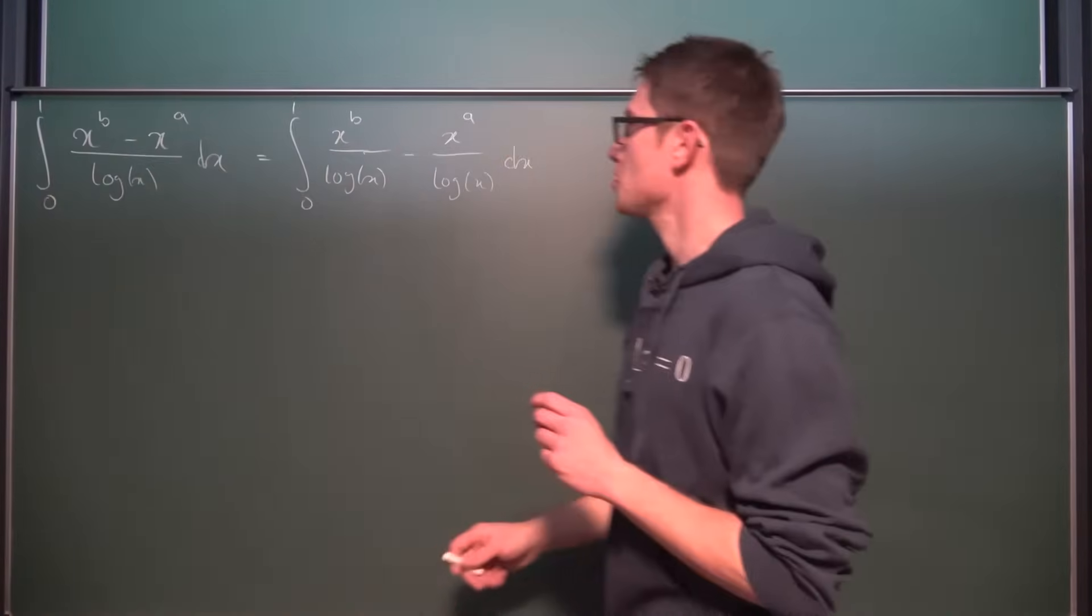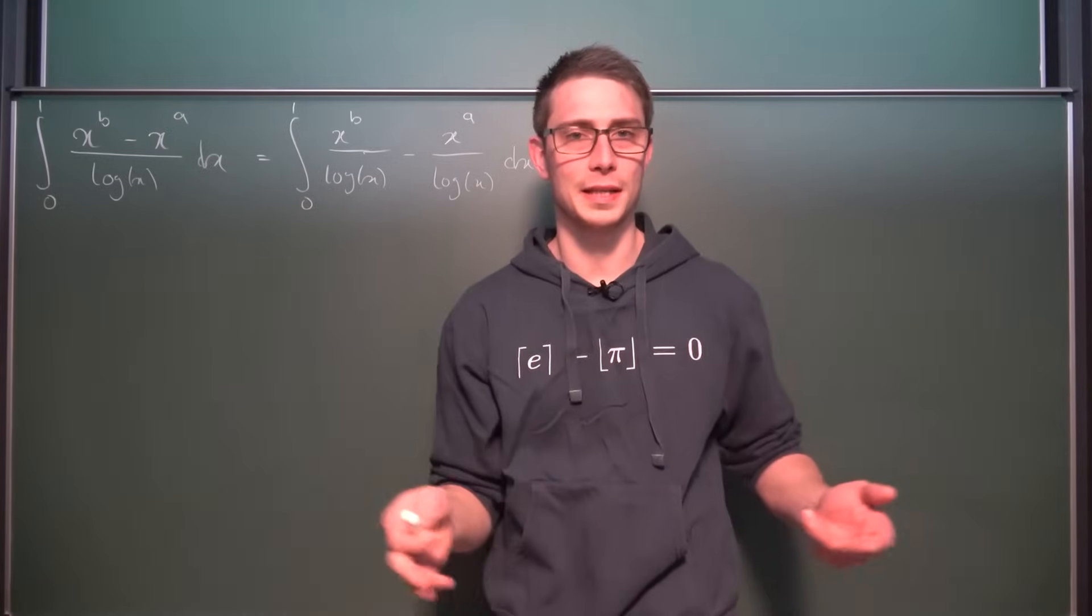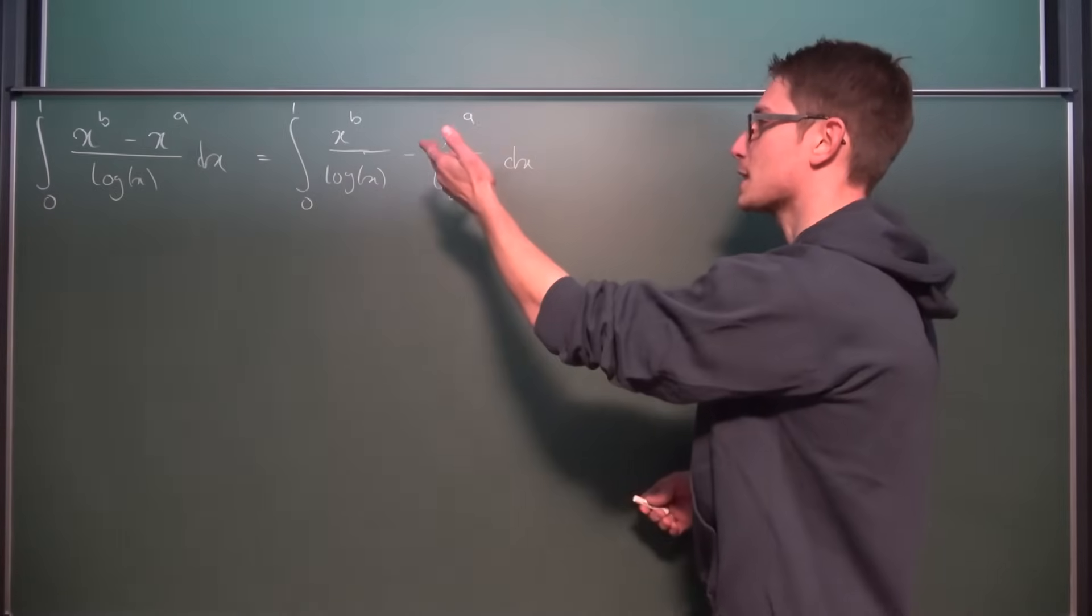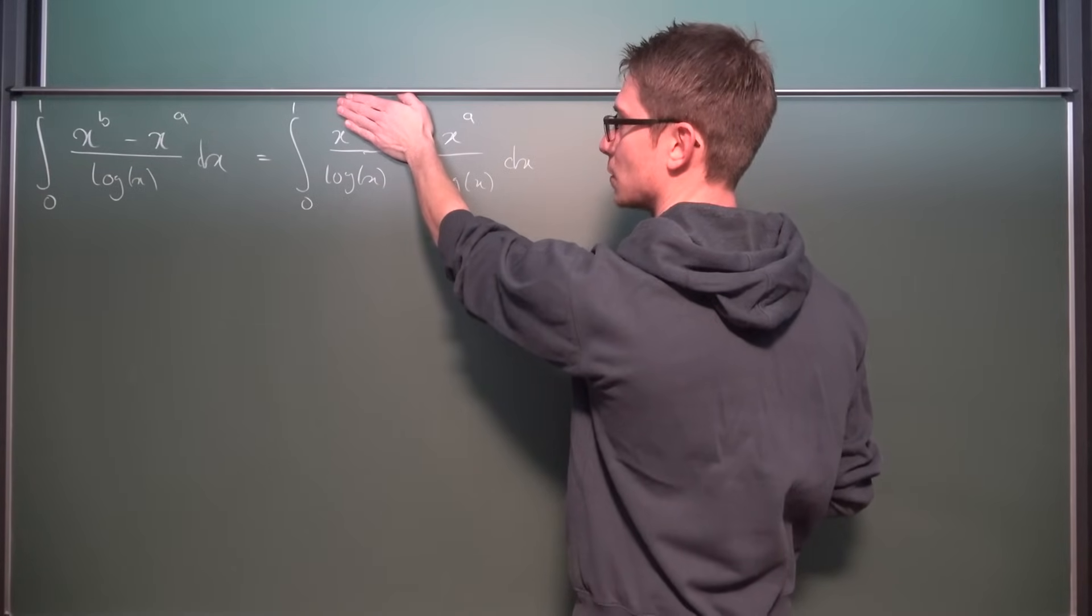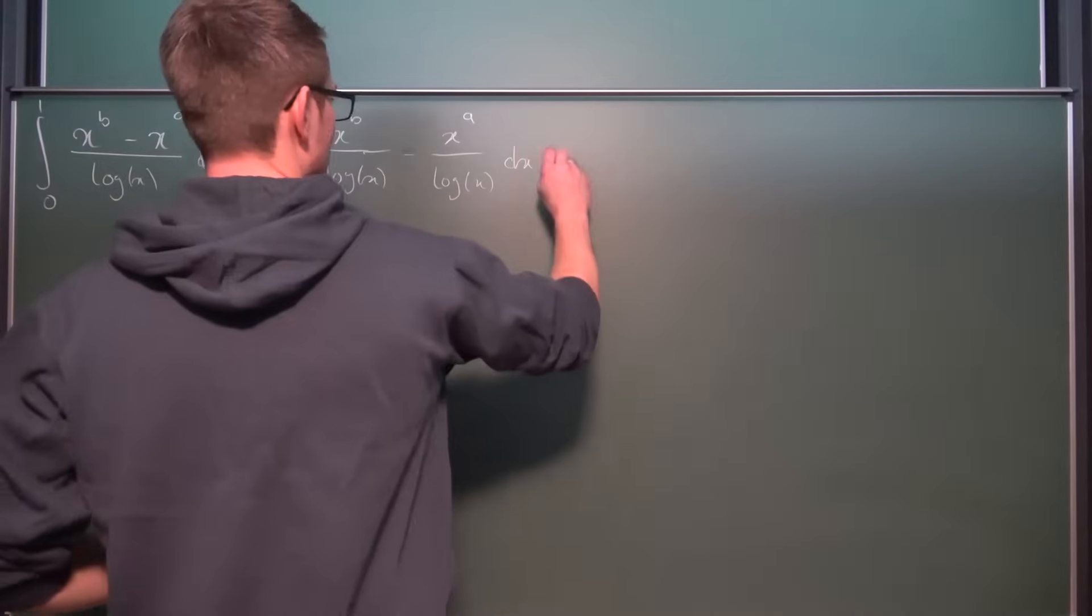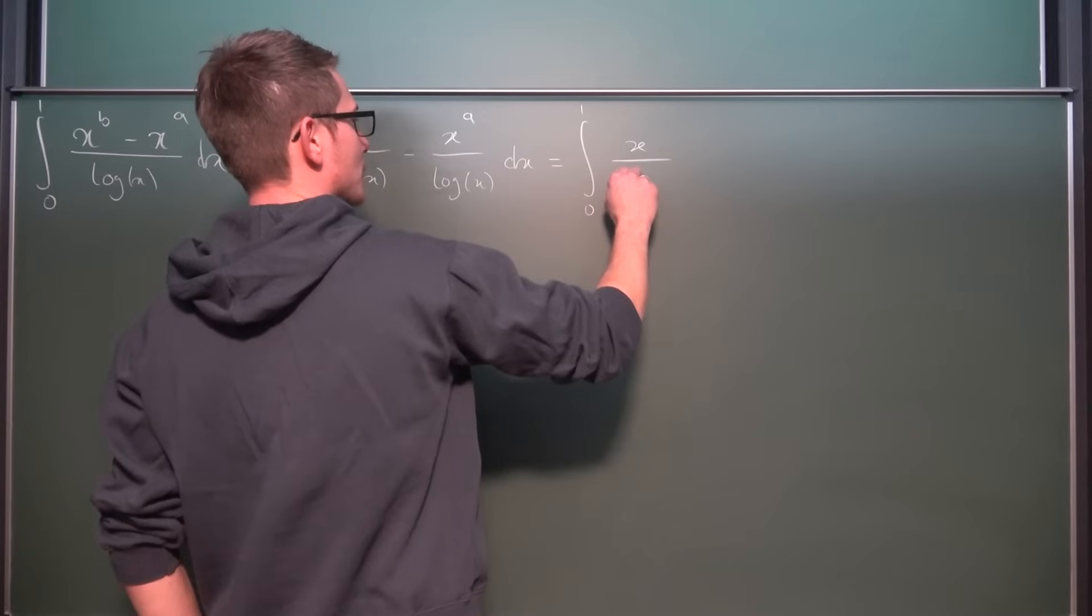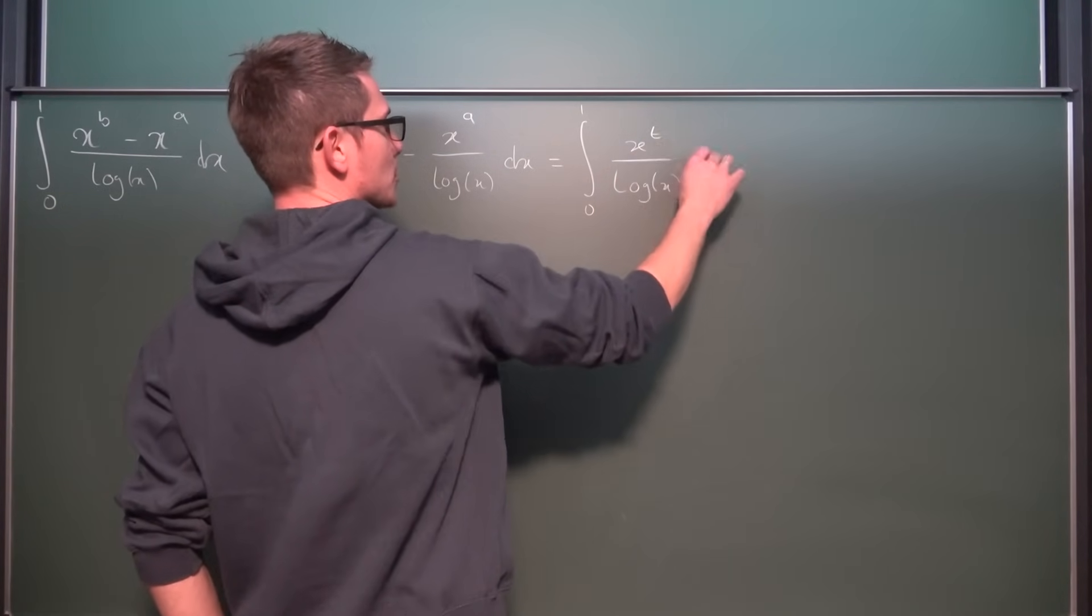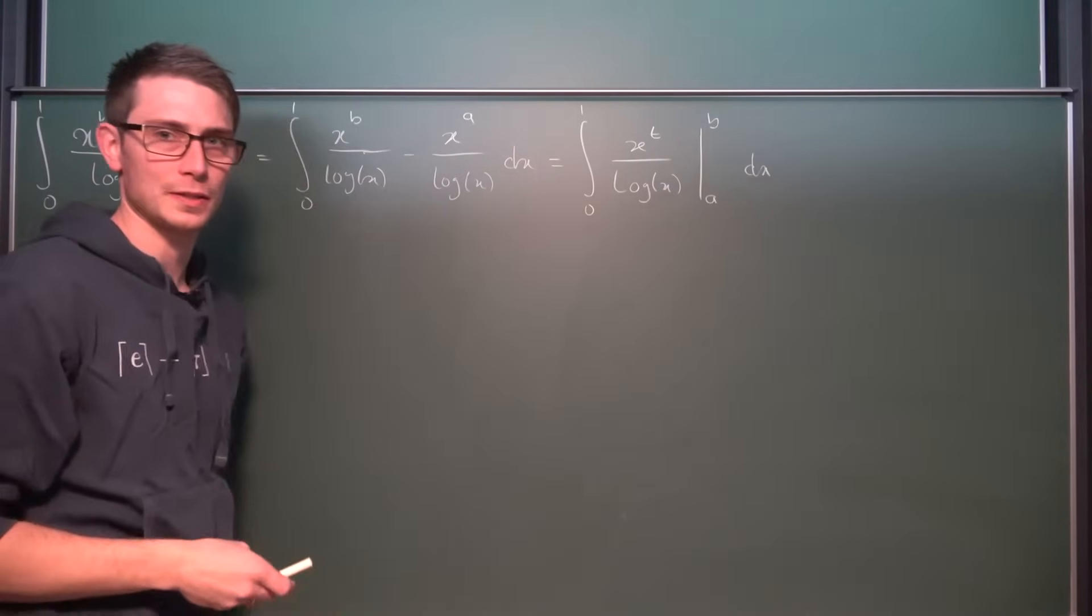Now what you might notice here too is that the b and the a that we got up here, it could also be an n and m, a cow and a dog, Joe and your mama, really doesn't matter. What you might notice is that we got the same function here with respect to x but with a different exponent. So we could rewrite this a tiny little bit. This could be a certain function, namely x to the tth power divided by the natural log of x, but with a certain exponent up here evaluated from a to b, and all of this integrated with respect to x.